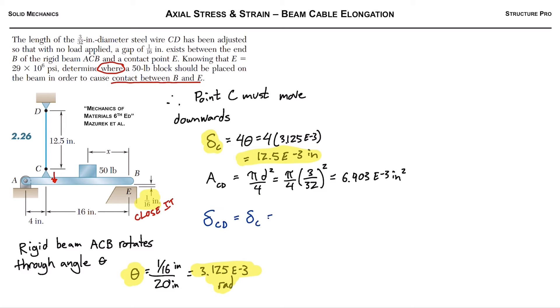The elongation of the cable CD can be put in equation form as FCD LCD divided by ECD ACD. E is the modulus of elasticity, 29,000 times 10 to the 6 psi here for steel. Rearranging this, because we already have delta C and all the other components except for the force, we can solve for the force in this cable.